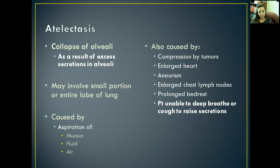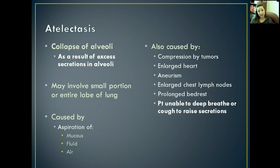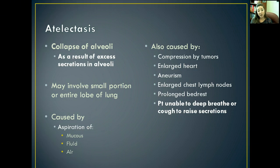Atelectasis, like we've already looked at with pneumonia, is a symptom — it's the collapse of the alveoli, which is our main area for gas exchange within our lungs. This can happen as a result of excess secretions within those alveoli. It might involve a small portion of the lung, an entire lobe, or if it gets really extensive, it could take out an entire lung. It's caused by aspiration of mucus, fluid, or air. It also can be caused by compression from tumors, enlargement of the heart, an aneurysm, enlargement of your chest lymph nodes, and because of prolonged bed rest. When a patient is lying down for an extended period of time, it puts pressure on the lung and doesn't allow it to expand properly, so the alveoli can collapse.